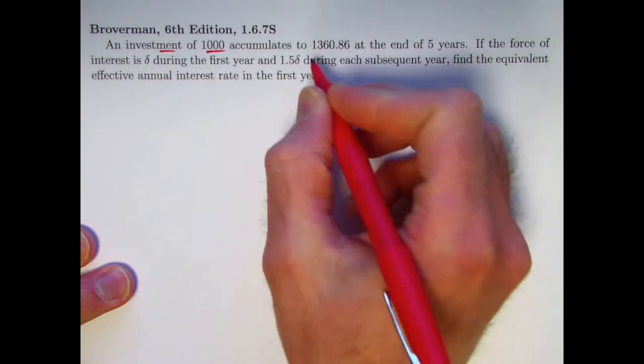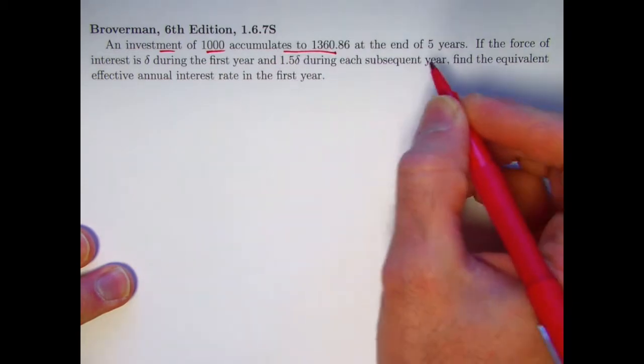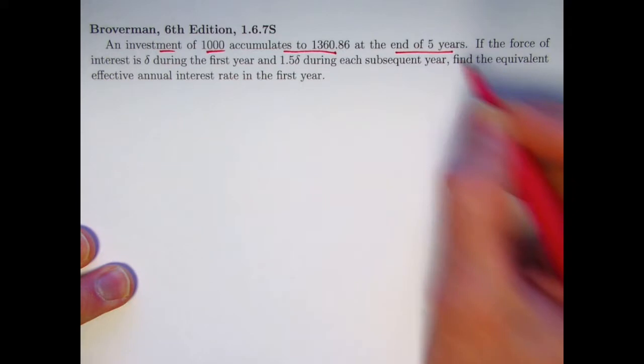You've got an investment of a thousand accumulating to a future value of 1360.86 at the end of five years.